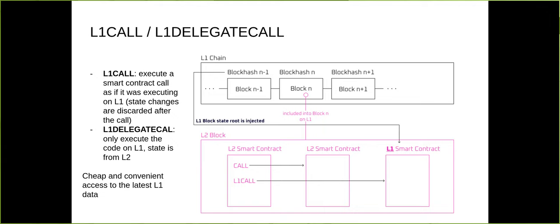L1 call executes code using the actual storage from L1. L1 delegatecall uses code stored on L1 but stores the resulting data on L2. So you can be flexible: if you need to verify something on L1 or access L1 state, use L1 call; if you just want to execute a program stored on L1 while still storing data on L2, use L1 delegatecall. This gives inherent parallelization because each L2 stores data separately.